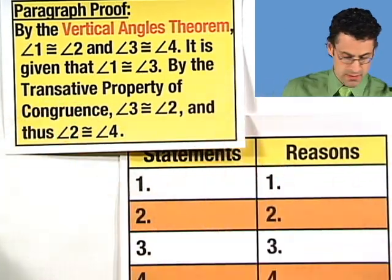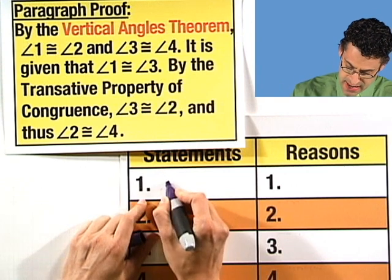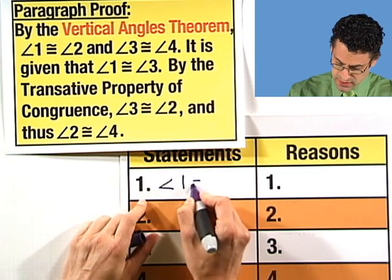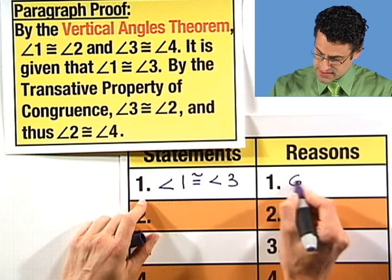So first of all, I'm going to start with the given. So the given is that angle one is congruent to angle three, and that's the given.